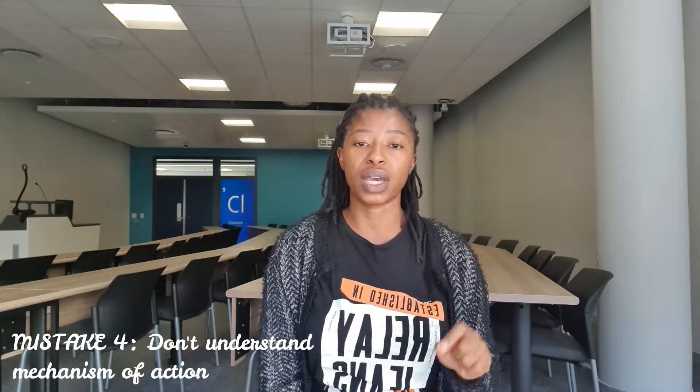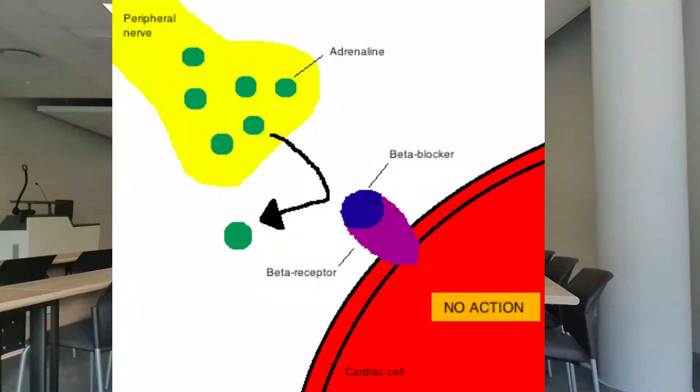The last mistake is not understanding the mechanism of action of the drug — what the drug does when it gets into the body. That's why I was reiterating that you need to understand pharmacodynamics and pharmacokinetics, because if you understand the mechanism of action it's much easier to figure out what the side effects are going to be.